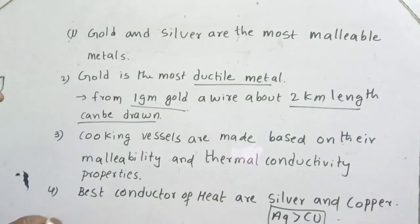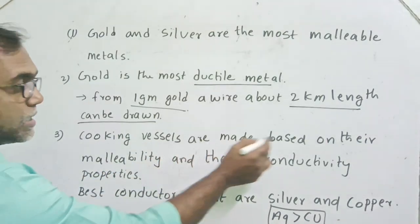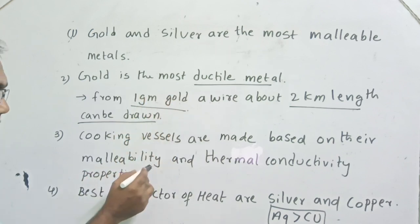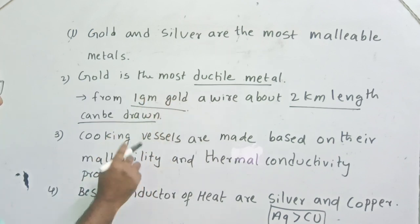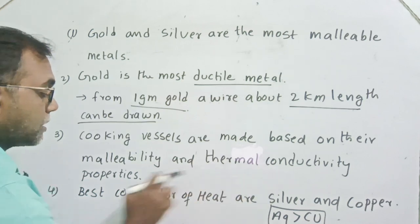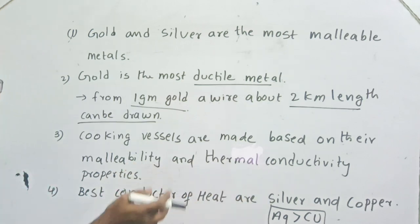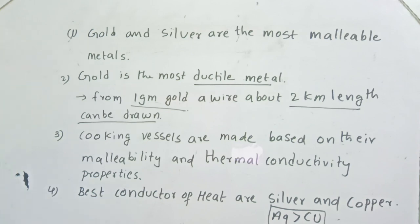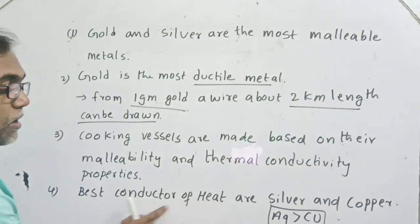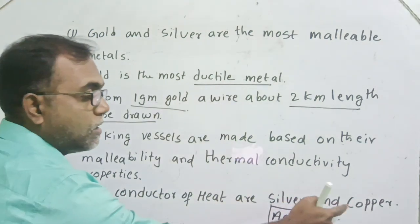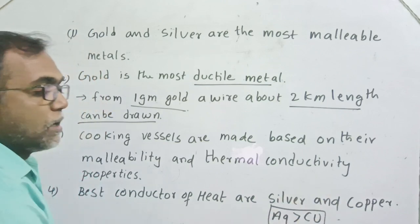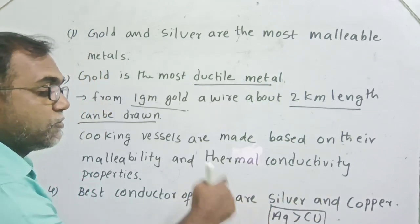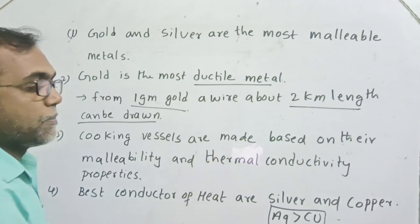Cooking vessels are made based upon two properties. One is malleability, so that they can shape the vessels. The second one is thermal conductivity, so that heat transfers for cooking purpose. The best conductors of heat are silver and copper. Among silver and copper, silver is the first priority, then copper.